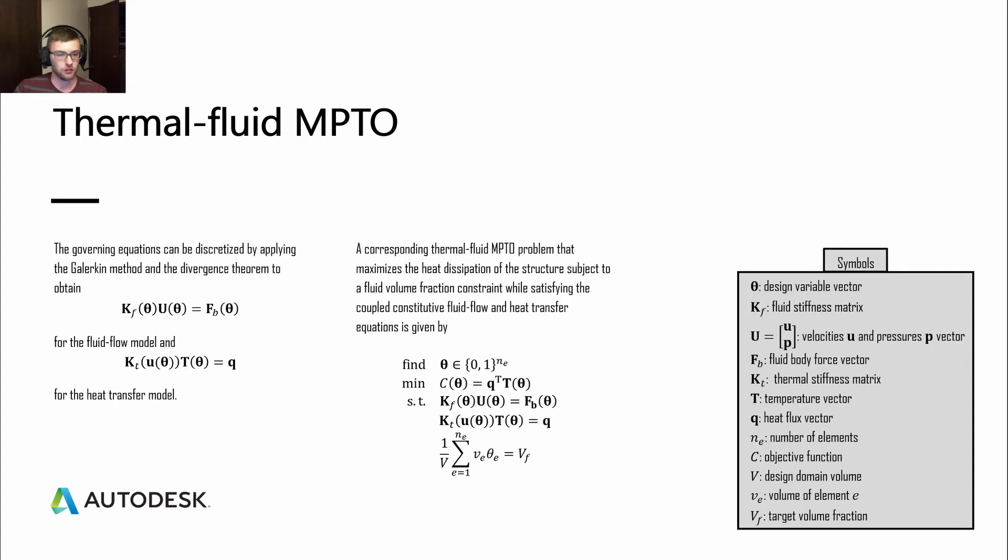The governing equations that we just saw can be discretized with the Galerkin method and the divergence theorem. We obtain these two different sets of equations for the finite element analysis. We have KF times U equals FB. This is for the fluid flow model. It's the flow stiffness matrix multiplied by a vector of velocity and pressures U. And then we have a fluid body force vector. The equivalent for the heat transfer model is KT times T equals Q. This is the thermal stiffness matrix multiplied by the temperatures is equal to the flux.